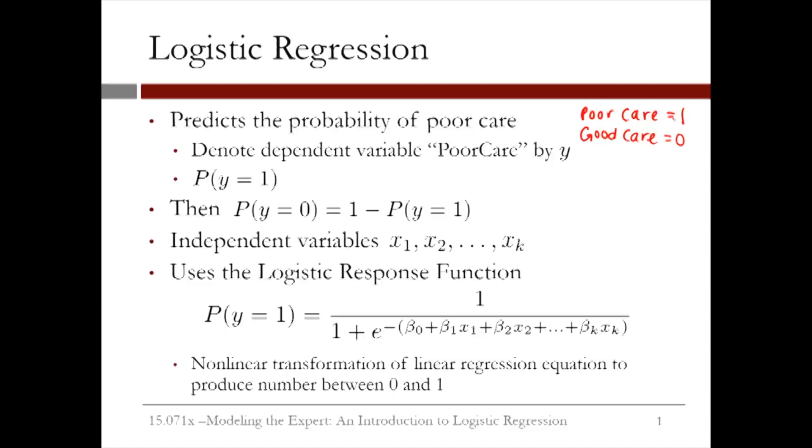Just like in linear regression, we have a set of independent variables x1 through xk, where k is the total number of independent variables we have. Then to predict the probability that y equals 1, we use what's called the logistic response function.